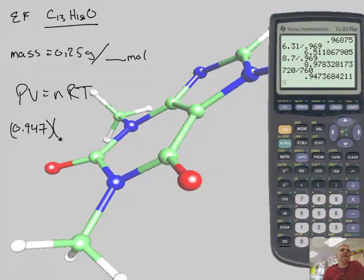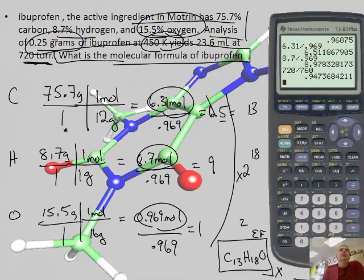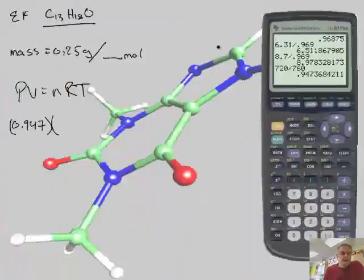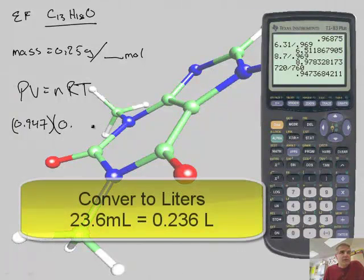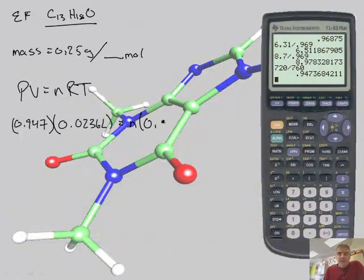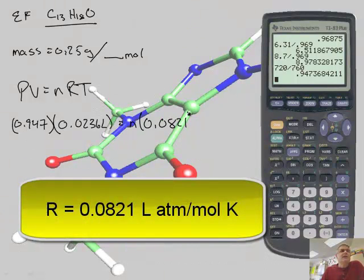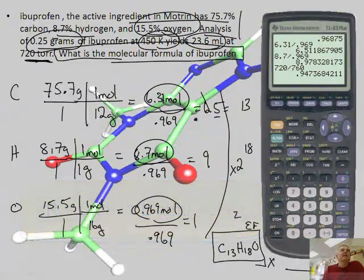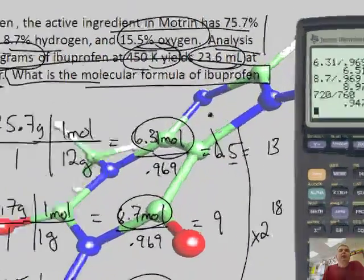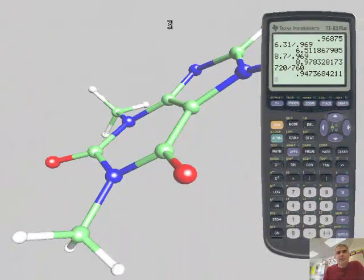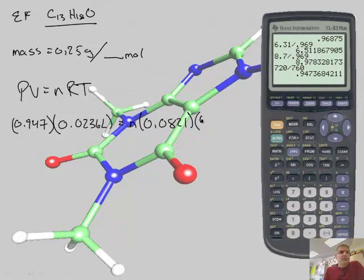0.947 times my volume. The volume was 23.6 milliliters. Divide by 1,000 to go from milliliters to liters, so that's 0.0236 liters, equals n times R. R is our constant, 0.0821, times my temperature, which is 450 Kelvin. That's nice, already in Kelvin.